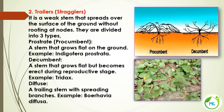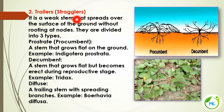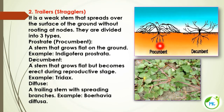The next kind of aerial modification is trailer, otherwise referred to as stragglers. This also has a weak stem and spreads over the ground, but here we will not find rooting at the nodes. The trailers are of three different types: prostrate, decumbent, and diffuse. First is prostrate, otherwise called procumbent.